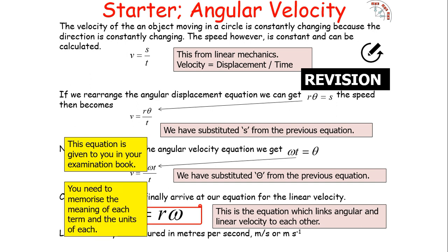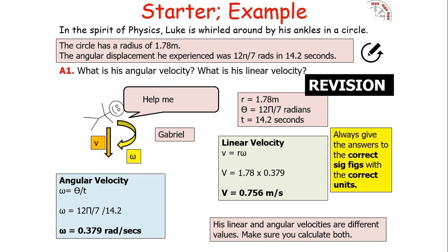Let's look at an example question. Luke is whirled around by his ankles in a circle with a radius of 1.78 metres. The angular displacement experienced was 12π/7 radians in 14.2 seconds. To find angular velocity: omega = θ/t = (12π/7) / 14.2 = 0.379 radians per second.